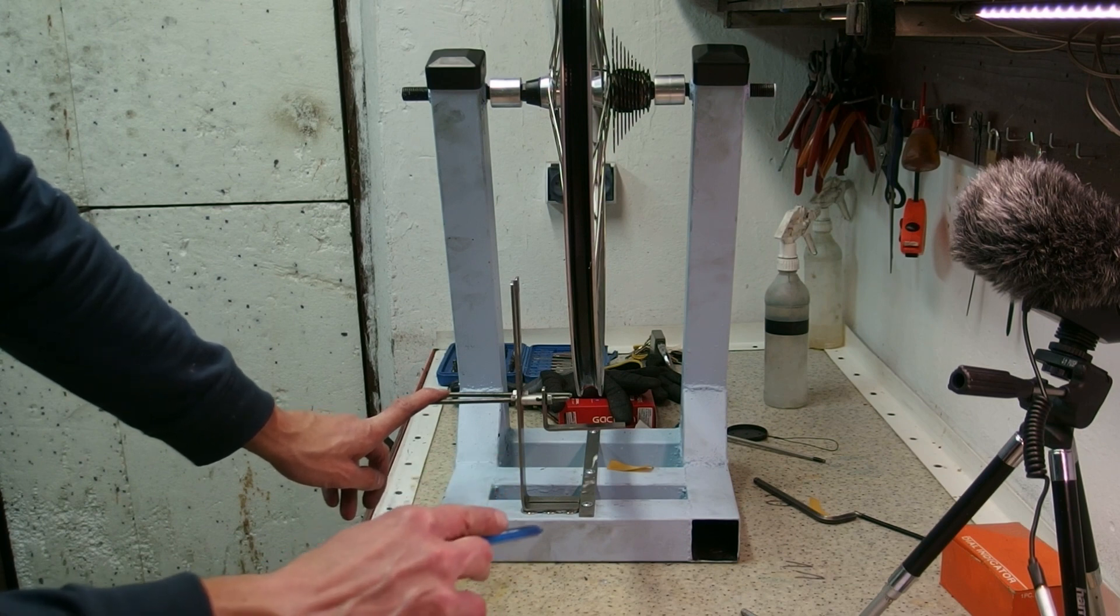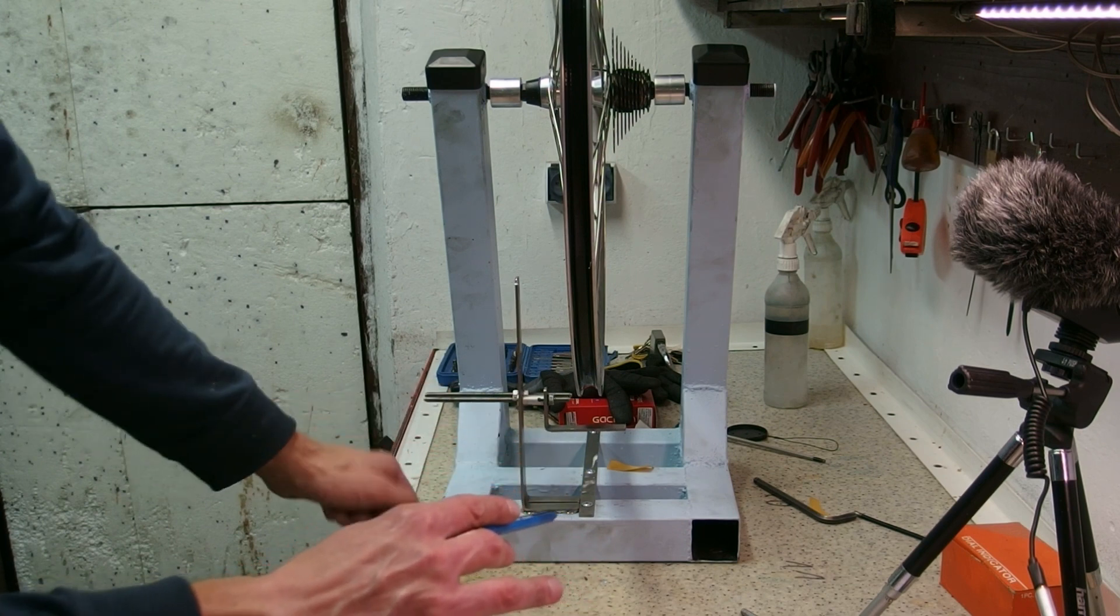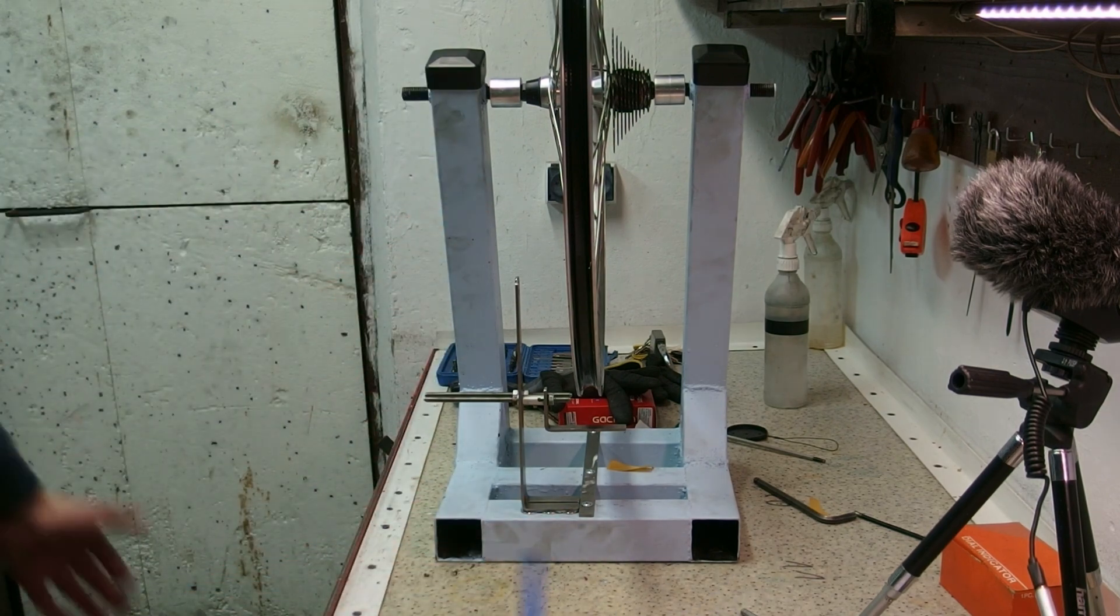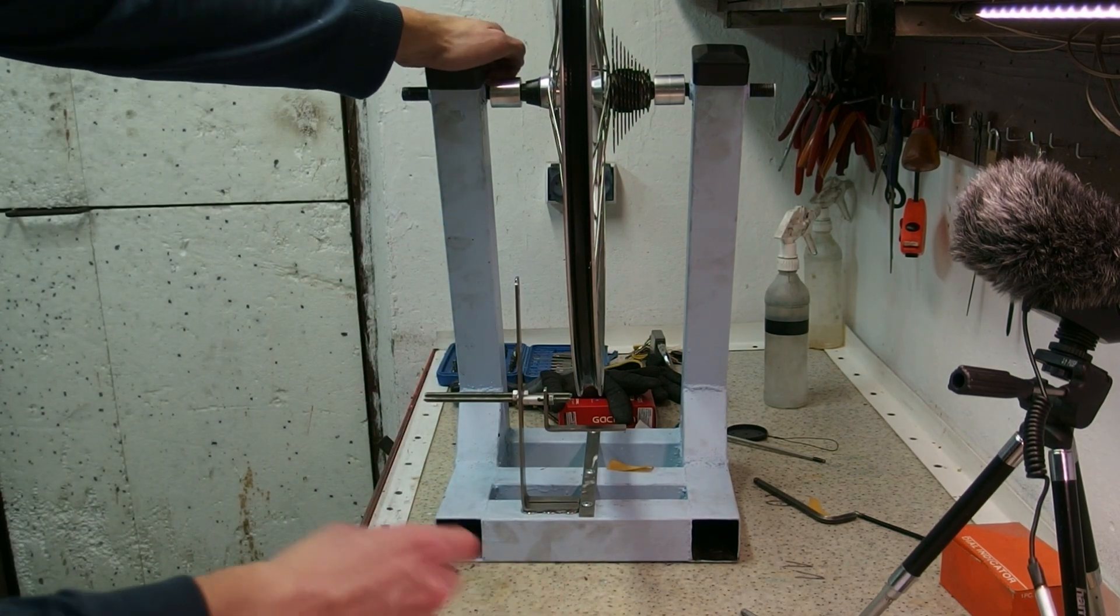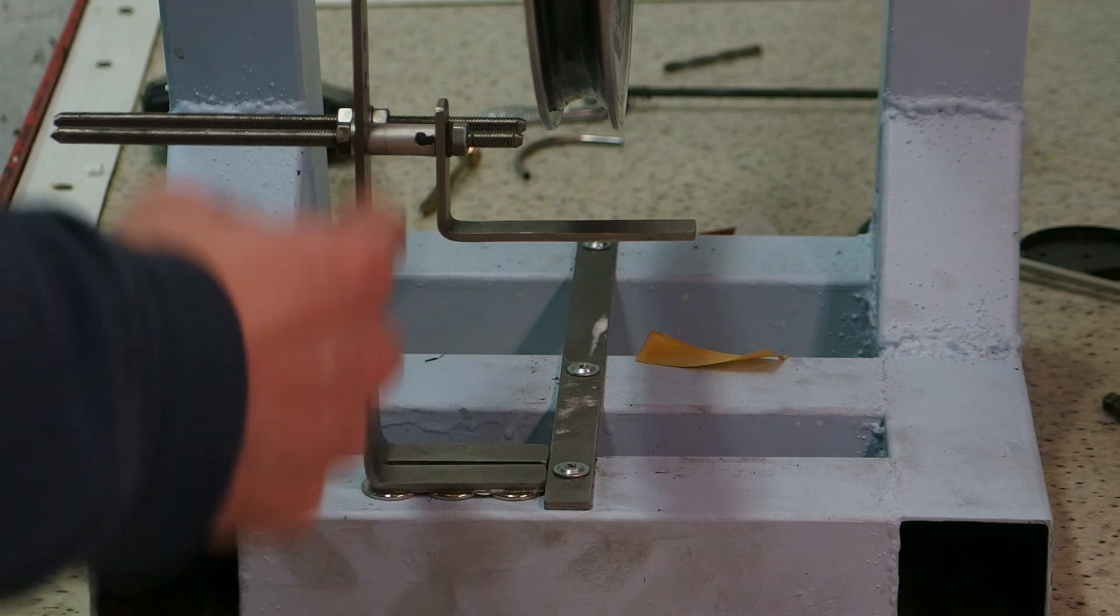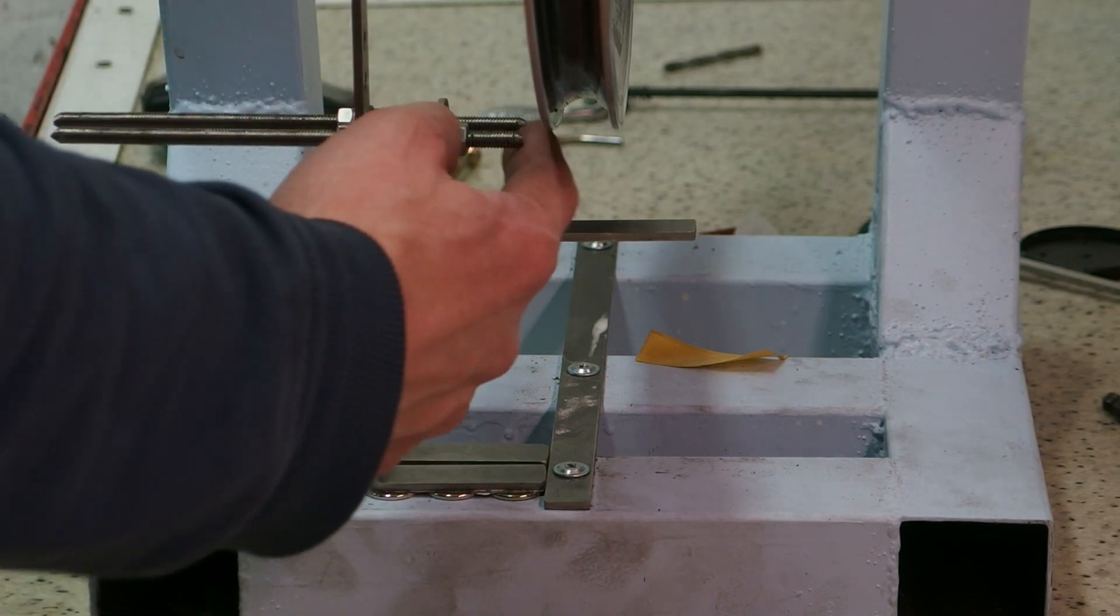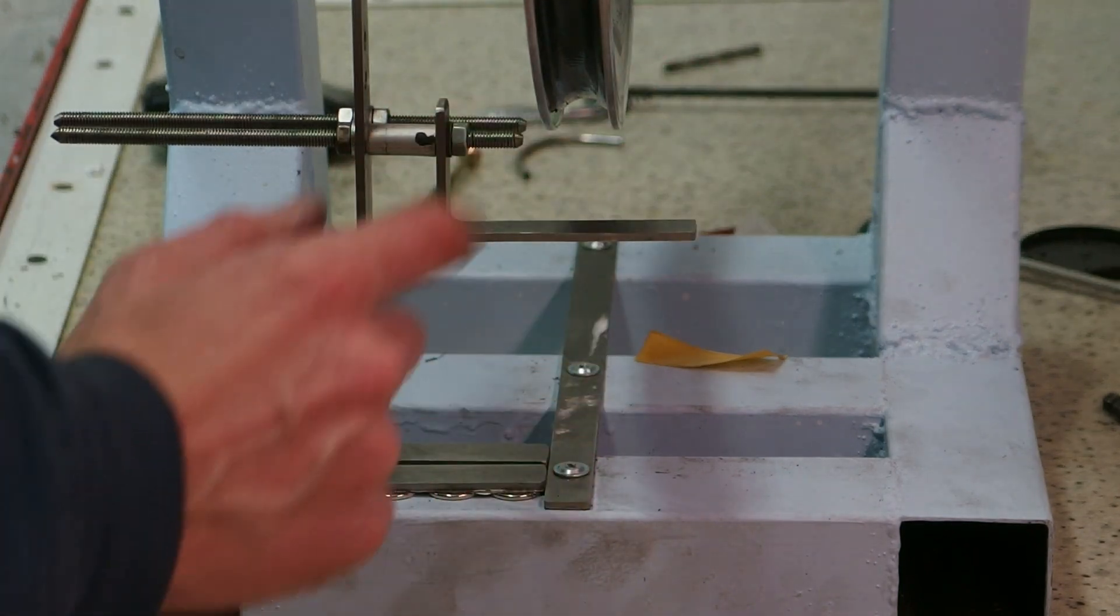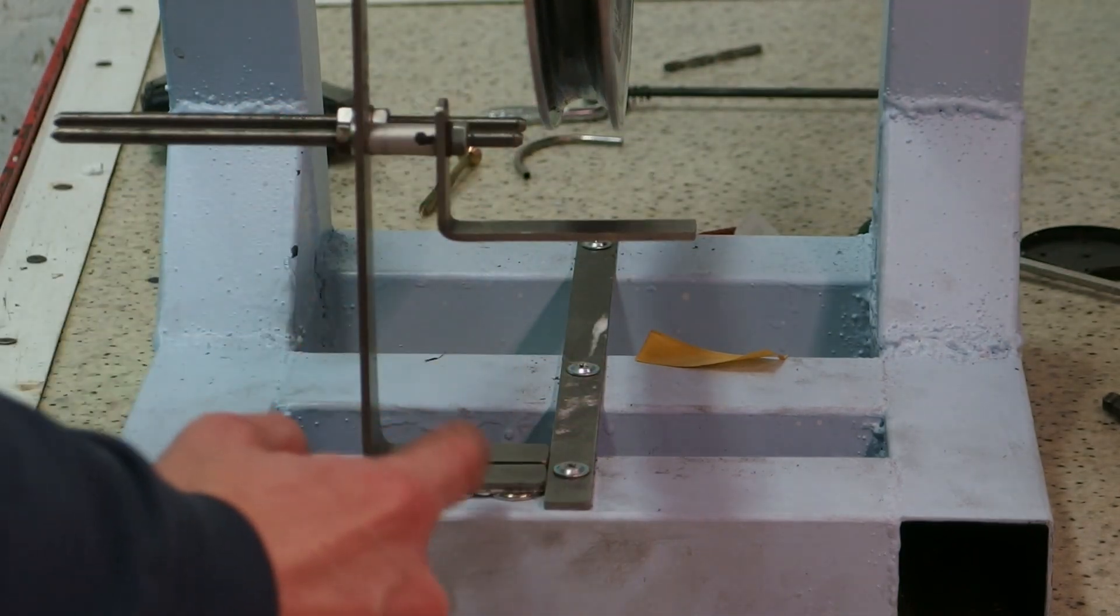I would probably make some sort of a pantograph or some arm or something that's going to be much more user friendly. Anyway, problem number two: you can see that these two elements have the tips of the threaded rods which are working as a claw for the rim are in the same plane.